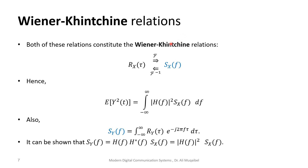When dealing with autocorrelation, the problem involves convolution. To avoid the double convolution, we work in the frequency domain where convolution becomes multiplication. The output power spectral density is related to the input power spectral density multiplied by the magnitude squared of the transfer function: S_Y(f) = S_X(f) · |H(f)|². This is a very handy relation.